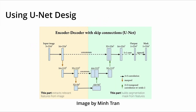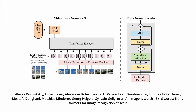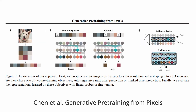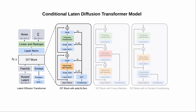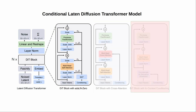Whereas traditional diffusion models use a U-Net convolutional design, the latent diffusion models or LDMs use transformers — more specifically vision transformers, which have been shown to scale more effectively for visual recognition than traditional convolutional networks. Whereas in language models transformers predict the next word in a sequence of words, in vision transformers they predict the next pixel autoregressively. As such, in a conditional latent diffusion transformer model, the input latent is decomposed into patches and processed by a diffusion transformer block for conditioning. This could be a block with adaptive layer norm, a block with cross-attention, or a block with in-context conditioning.